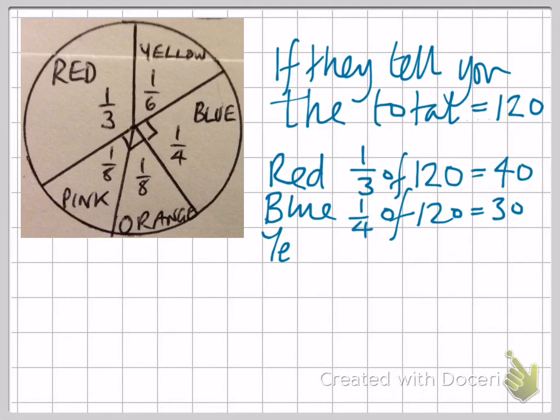Moving on, we've got yellow. Yellow would be one sixth of 120, which would give you 120 divided by 6, which is 20.